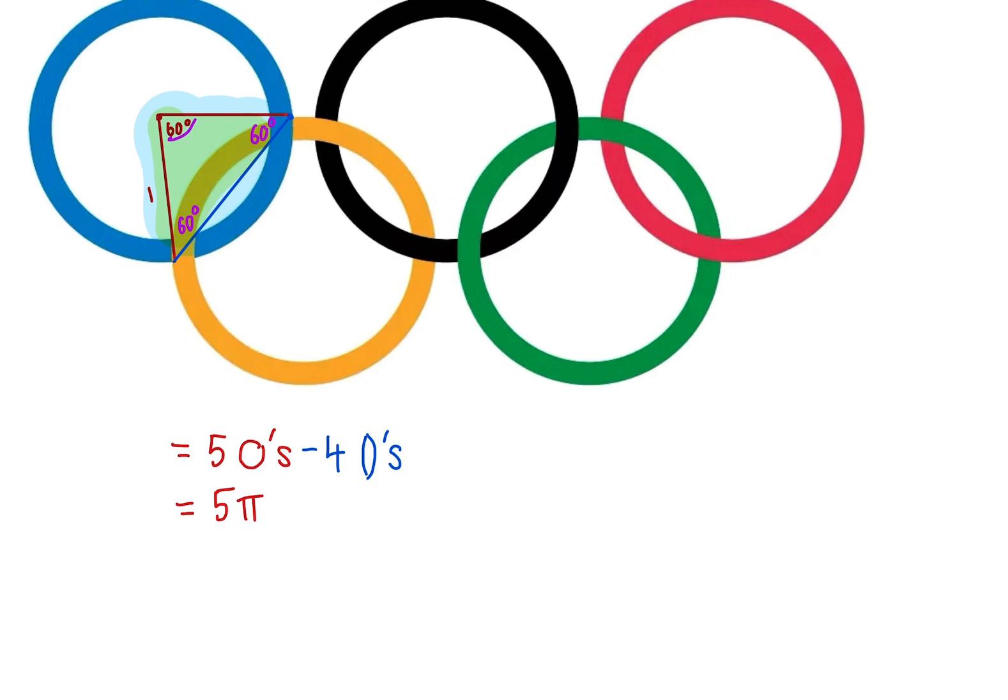So, four crescents, each of those is going to be consisting of, as we saw, the sector, which is 60 over 360 times a circle times pi, one-sixth pi, and then an equilateral triangle, which has an area of root 3 by 4 side squared, which is just one in this case, so root 3 by 4.